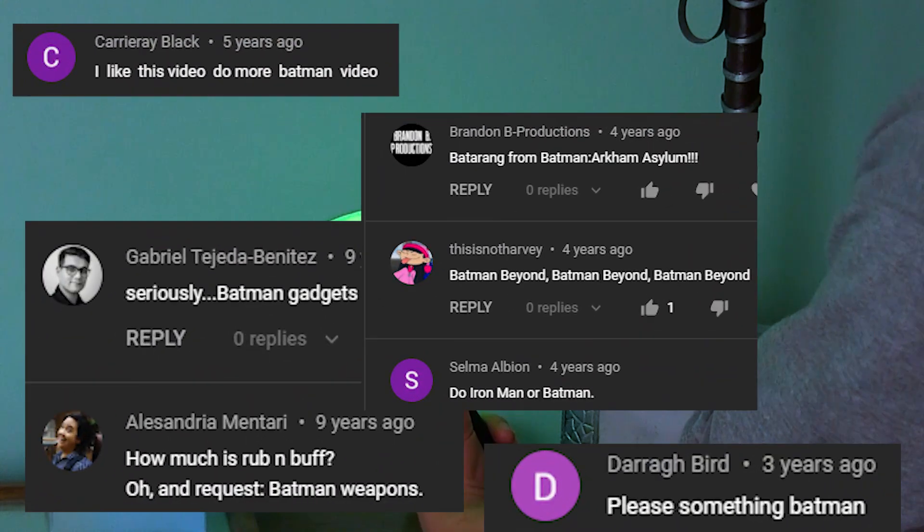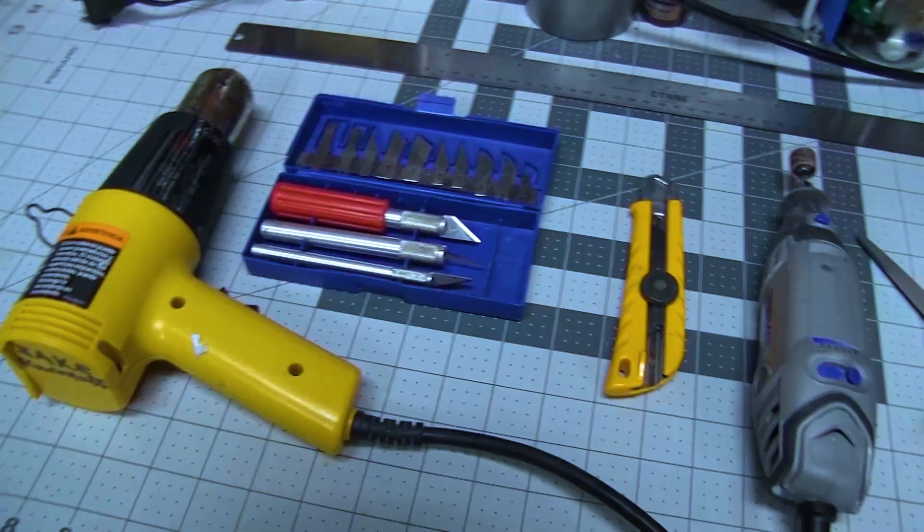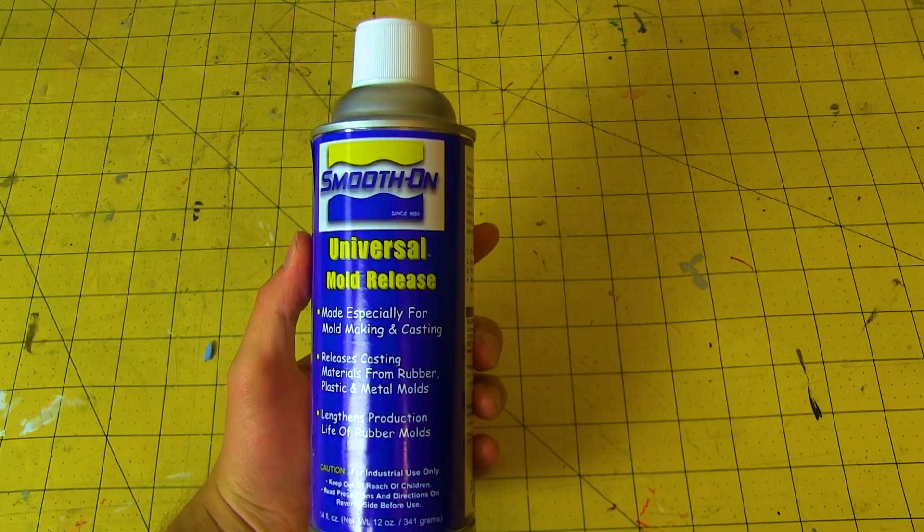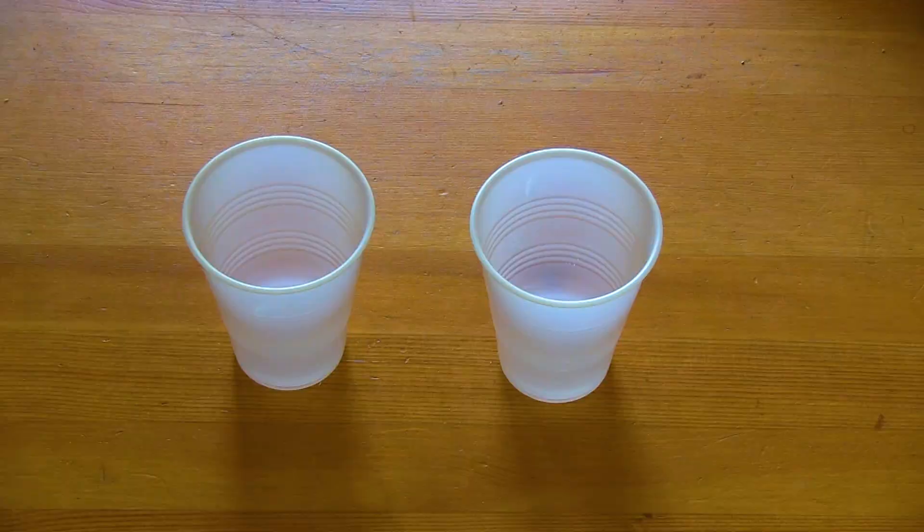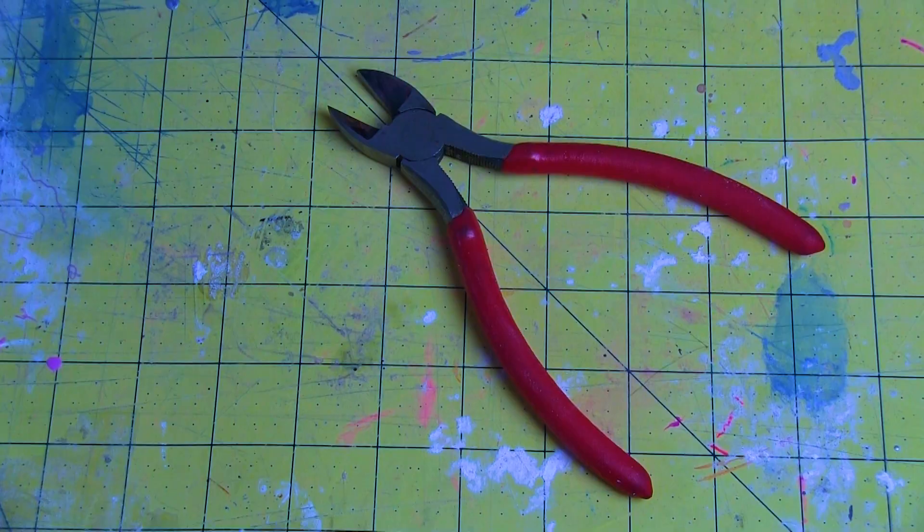Today I'm going to show you how to make a kryptonite batarang. For this build, I use hot glue, silicone, universal mold release, resin, glow-in-the-dark powder, mixing cups, plasti-dip, side cutters, and Legos.